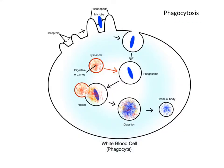Phagocytosis, or cell feeding, is a type of endocytosis where the cell ingests larger solid substances, such as viruses, bacteria, or even worn out or dead cells. Cells in the body that are capable of phagocytosis are called phagocytes. They include white blood cells, such as neutrophils and macrophages, that are important for the body's immune defense and help prevent infectious disease.